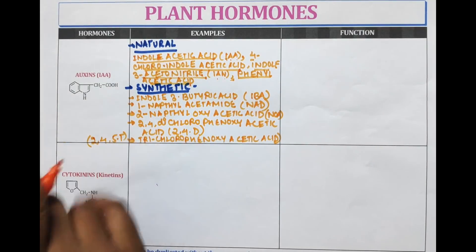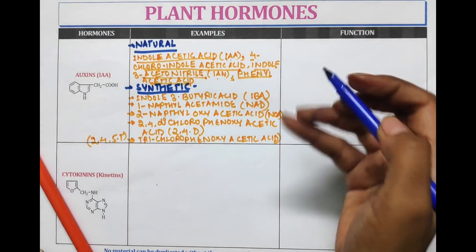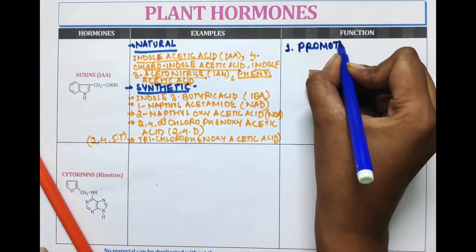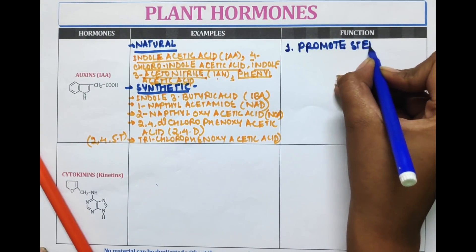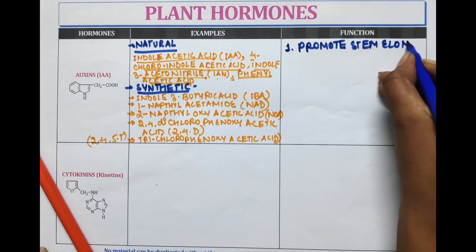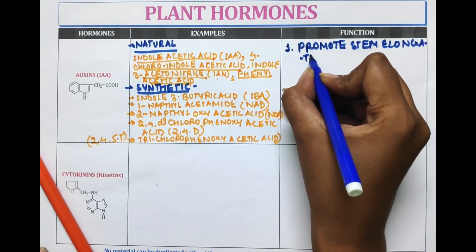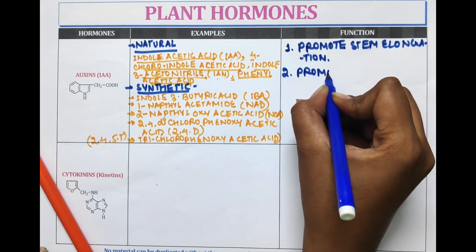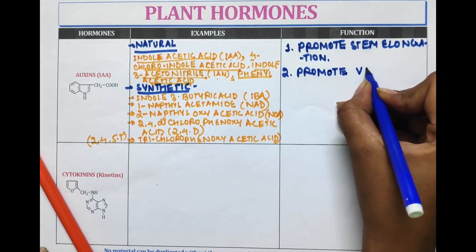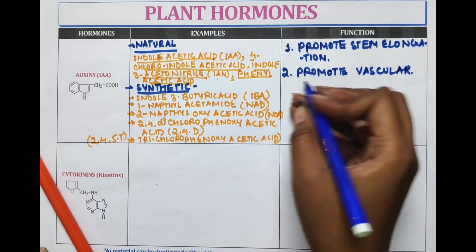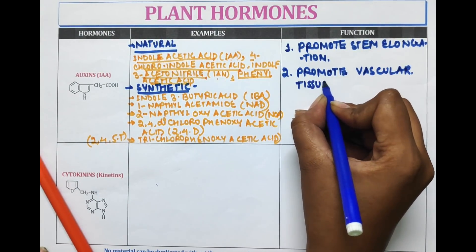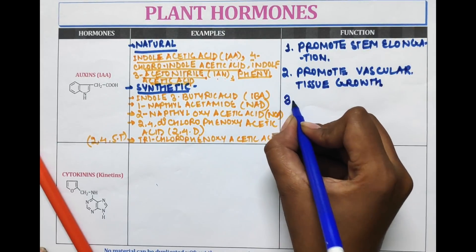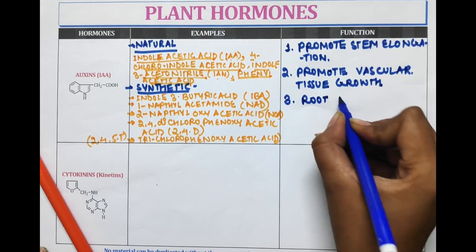These were the examples of auxin. Now let's discuss the functions. The first function of auxin is to promote stem elongation. Second is to promote vascular tissue growth. Third is to promote root initiation.